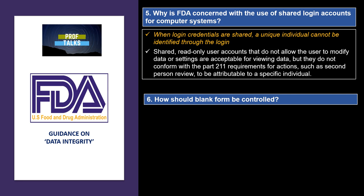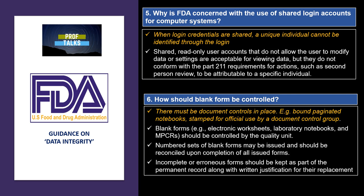The next question is: how should blank forms be controlled? FDA states that there must be a documented control in place, such as paginated bound books or documents stamped for official use by a control group. Blank forms should be controlled by the quality unit. Numbered sets of blank forms may be issued and should be reconciled upon completion. Incomplete forms should be maintained along with the original records and the justification for their replacement.